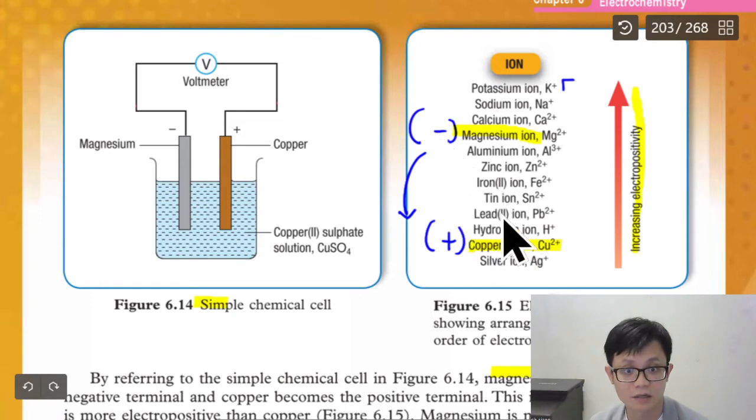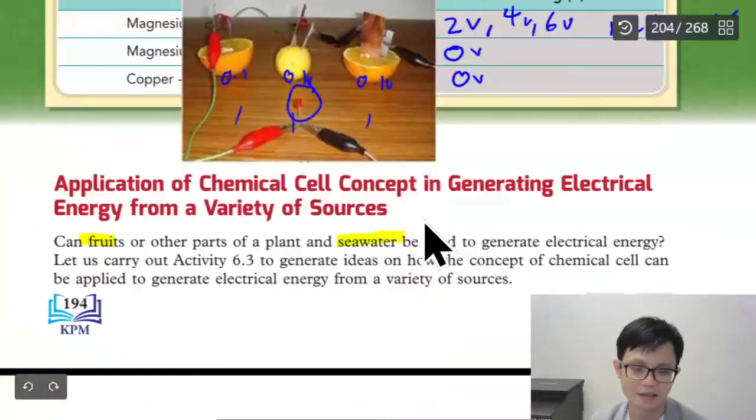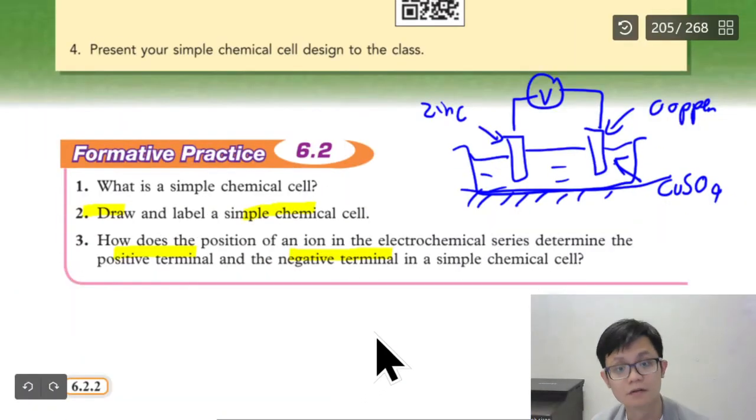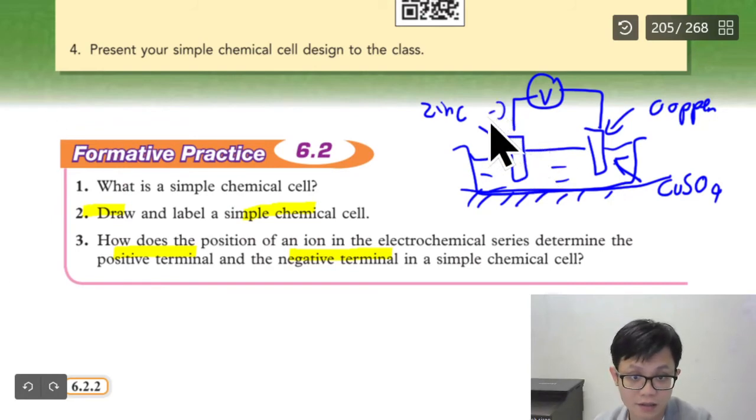Copper and zinc. Zinc will be the negative. Copper will be the positive. The upper is it, the more negative. I mean the terminal is negative. Not the more negative. Because the question asks the negative terminal. So the negative terminal will be the zinc. The positive terminal will be the copper.